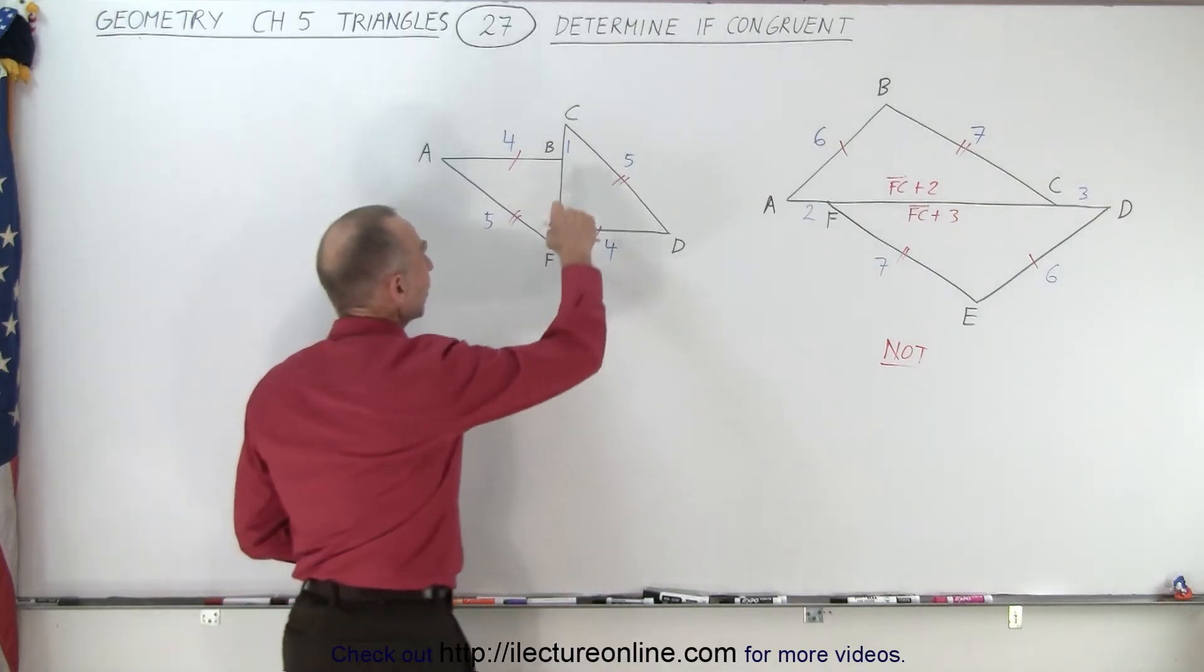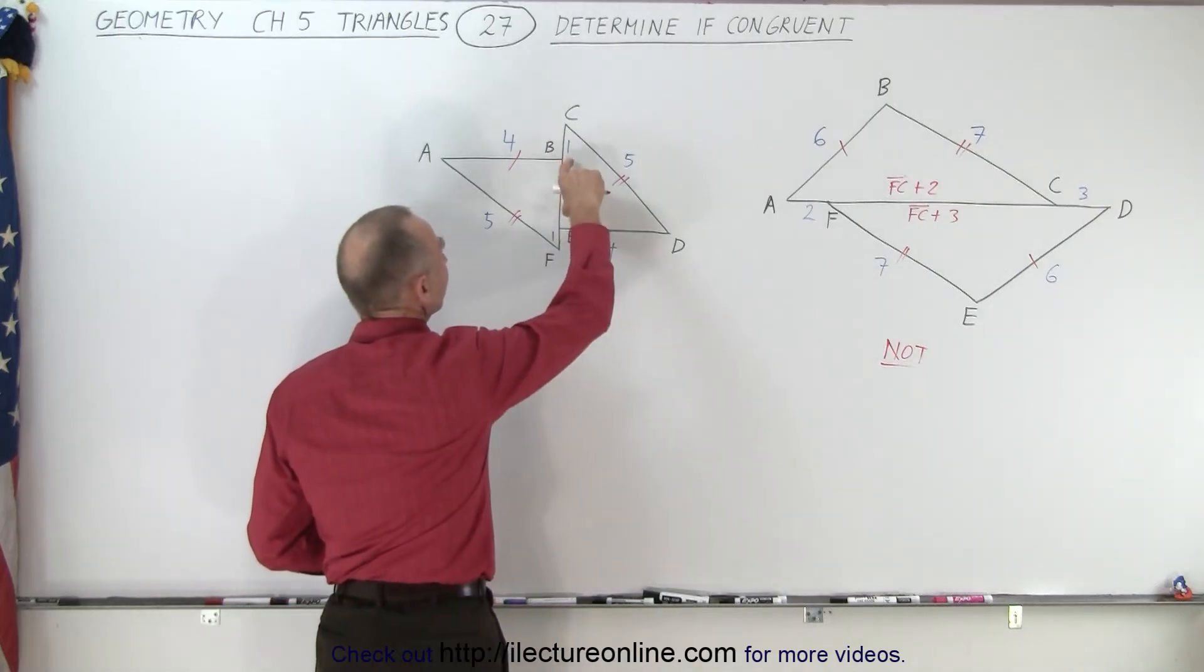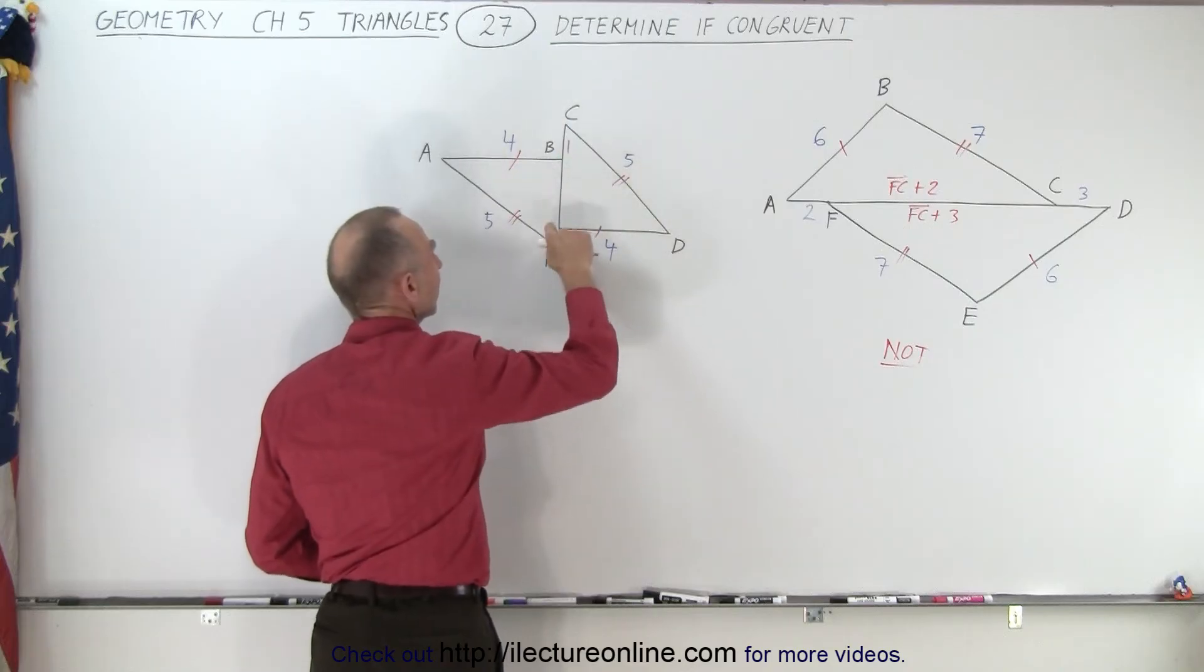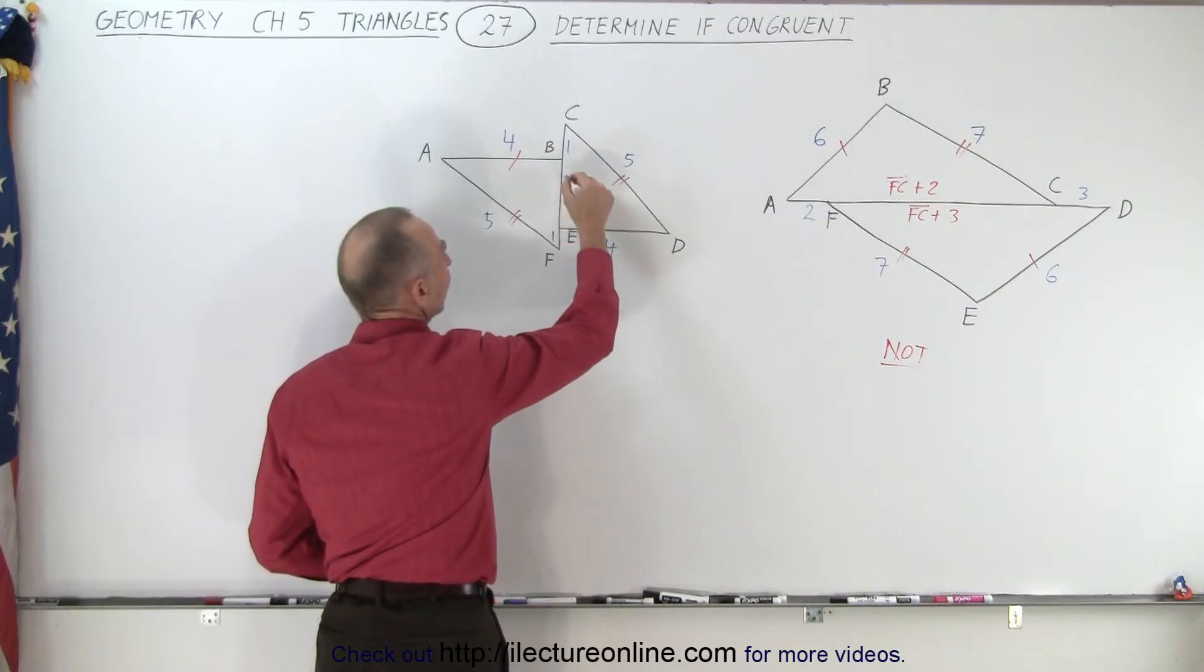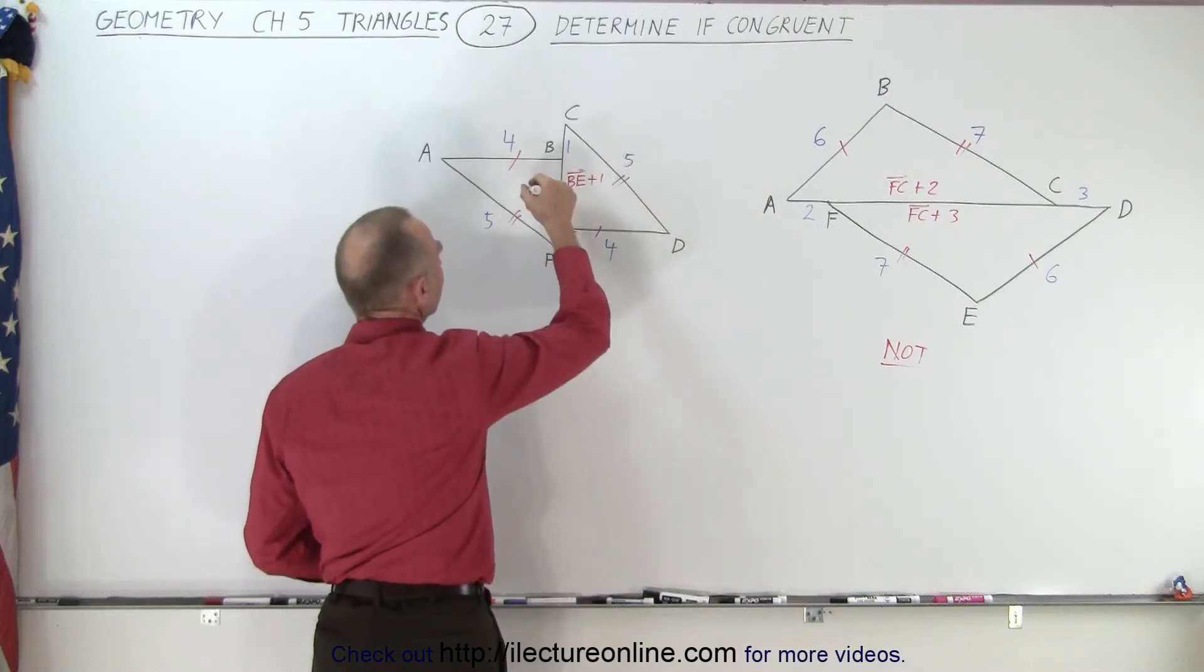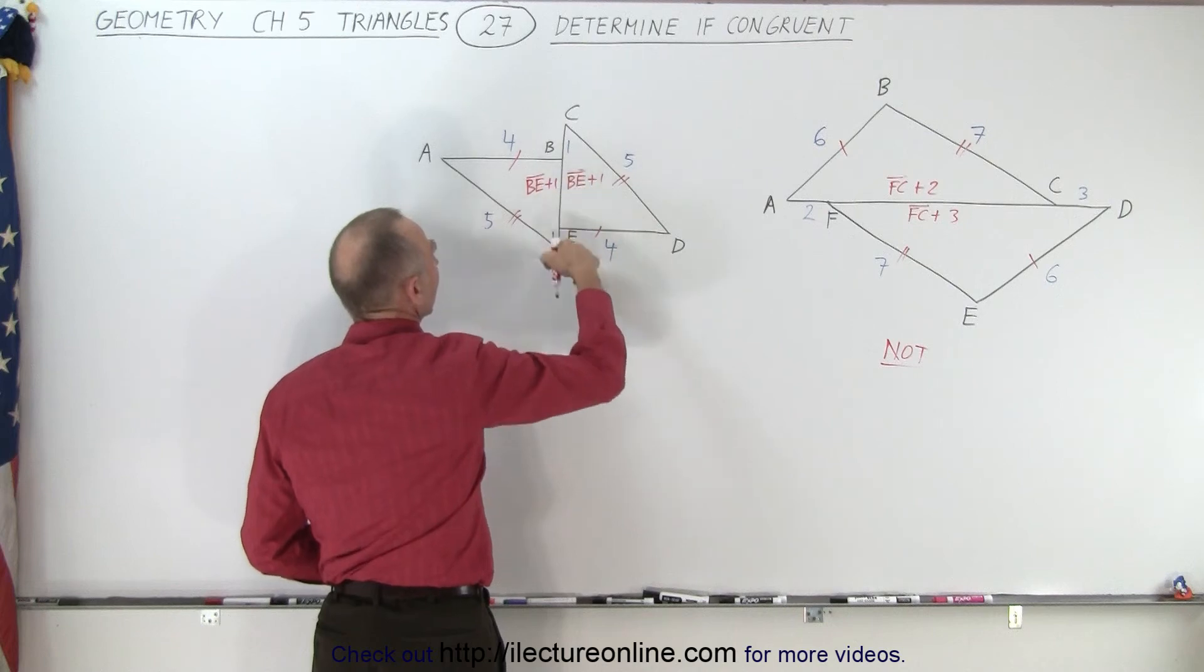And then you can see that the section from B to E is common for both. But this triangle has one extra unit over here, and this triangle has one extra unit over here. So you can see that on both sides we have BE plus 1—and I don't need that little angle, that's not a vector. And here we have BE plus 1 for this triangle.